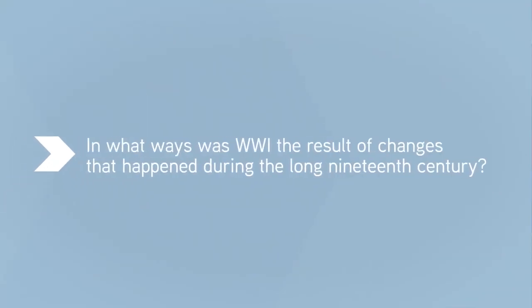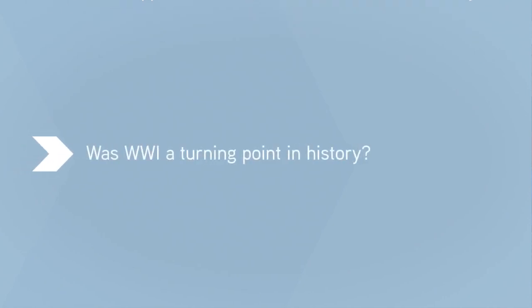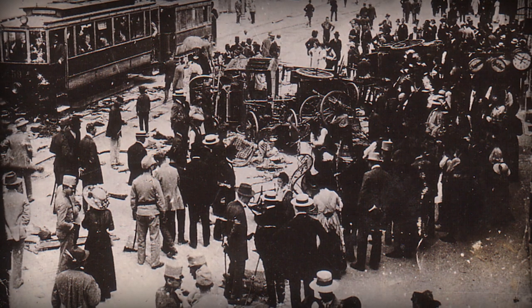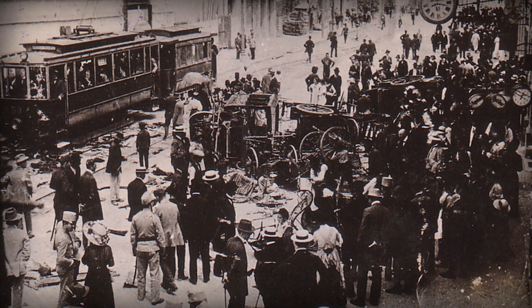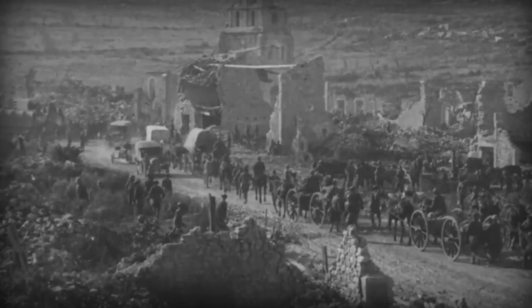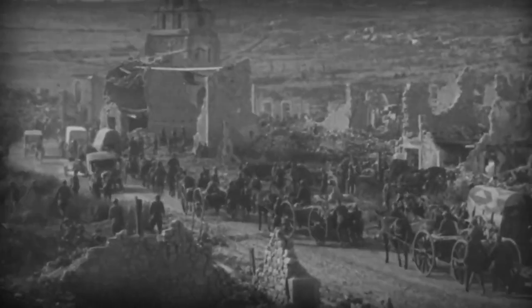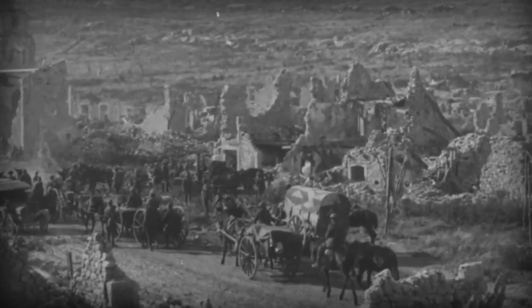In this unit, we ask some key questions. In what ways was the First World War the result of changes that occurred in the long 19th century? Was it a turning point in world history? As we have just seen, one way to begin to answer those questions is to look backward from May 1914. We can view the war as bringing into question all of the progress that people believed had been made over the course of the long 19th century.